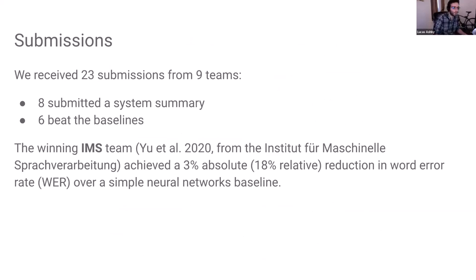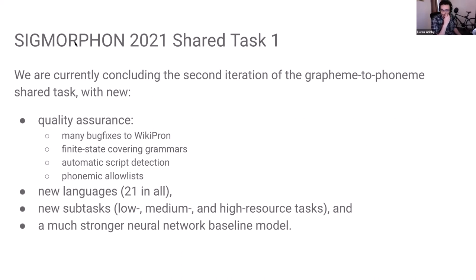The purpose of doing these shared tasks was, one, to get the word out about Wikipron, and two, to demonstrate that the data obtained via Wiktionary was useful for grapheme-to-phoneme work. We've posted another shared task this year, which is in its final stages, the results of which are forthcoming. This one included all of the quality assurance work we've done over the last year, because one result of the first shared task was the exposure of quite a lot of problems in the languages we used. For this task, we also used new languages and a low, medium, and high resource task, as well as a much stronger neural network baseline.